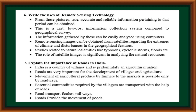Read the uses of remote sensing technology. From these pictures, true, accurate, and reliable information pertaining to that period can be obtained. This is a fast, low-cost information collection system compared to geographical survey. The information gathered can be easily analyzed using computers. Remote sensing images can be obtained from satellites regarding the extremes of climate and distribution of geographical features. Studies related to natural calamities like typhoons, cyclonic storms, floods, etc. are also facilitated. The role of satellite images is significant in analyzing natural resources.